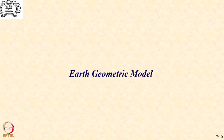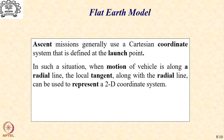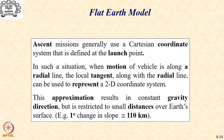Let us now move over to the last modeling requirement, that is the earth geometric model. Ascent missions generally use a Cartesian coordinate system that is defined at the launch point. In such a situation, if the motion of the vehicle is along a radial line, then the local tangent along with the radial line can be used to represent a 2D coordinate system for describing the mathematical equations governing the ascent mission. Another benefit of such a model is that it results in a constant gravitational direction, which is along the radial direction as per our universal law of gravitation model.